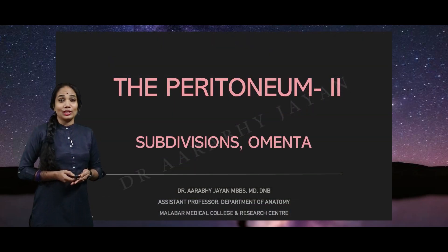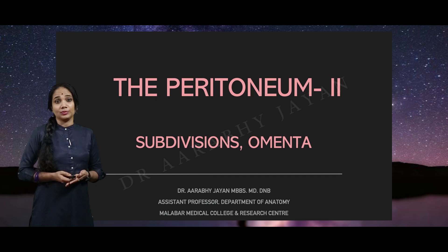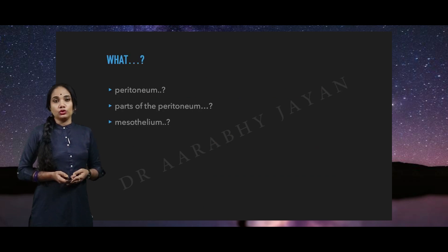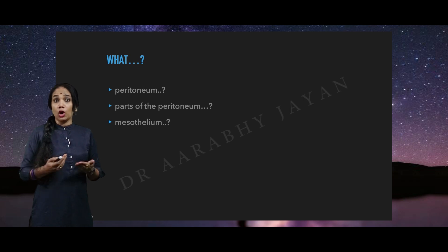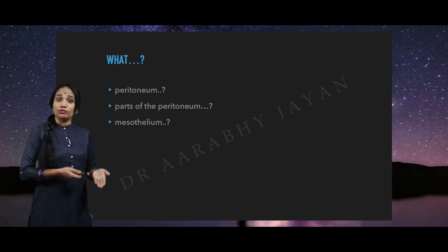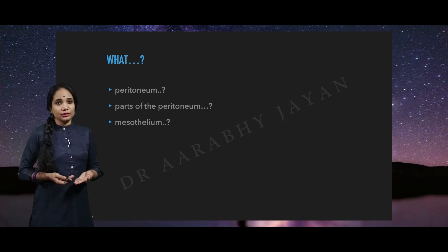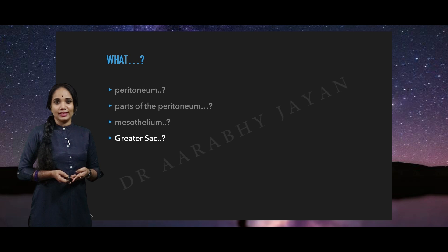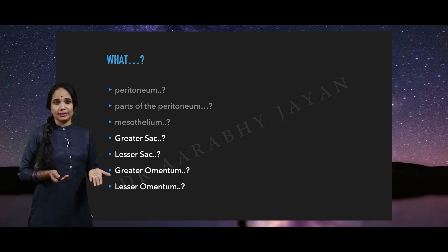Hello everybody, let's talk about the subdivisions and omenta, which is peritoneum part 2. In the first part, I'll keep the link below; we talked about what the peritoneum is, what are the parts of the peritoneum, what is meant by mesothelium, and we also talked about the peritoneal fluid and abnormal collection of peritoneal fluid, which is ascites. In this session, let's talk about the greater sac, the lesser sac, the greater omentum, and the lesser omentum.